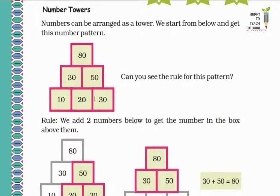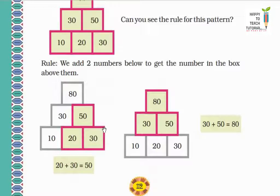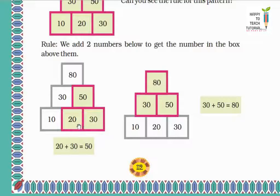So when you add the two numbers, you write the answer in the box above those two numbers. For example, 20 plus 30 equals 50 — write 50 in the box above. Then 30 plus 50 equals 80 — write 80 in the box above those two. This is how the number tower pattern works, building upward from the bottom.